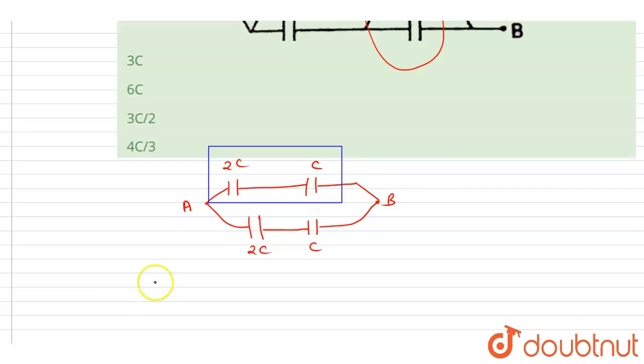You will use the series formula C1 times C2 divided by C1 plus C2. So if I write down C', it is 2C divided by 3, and same for this, it is 2C divided by 3.